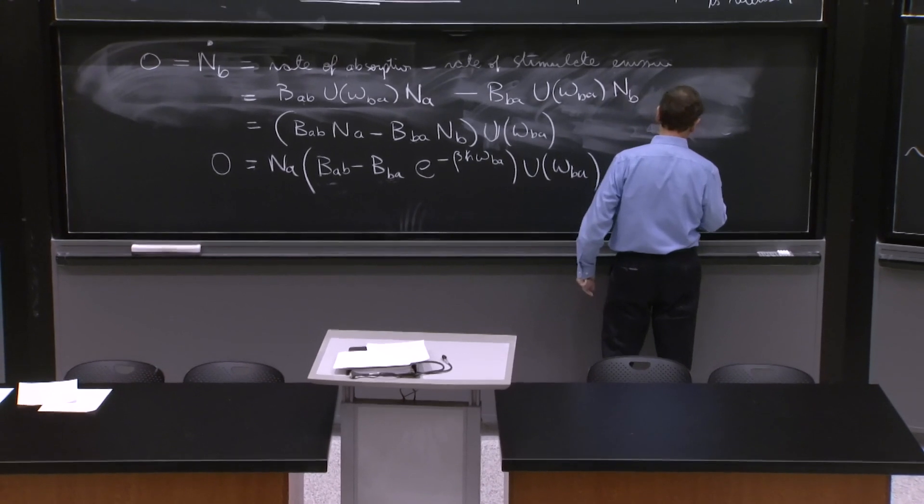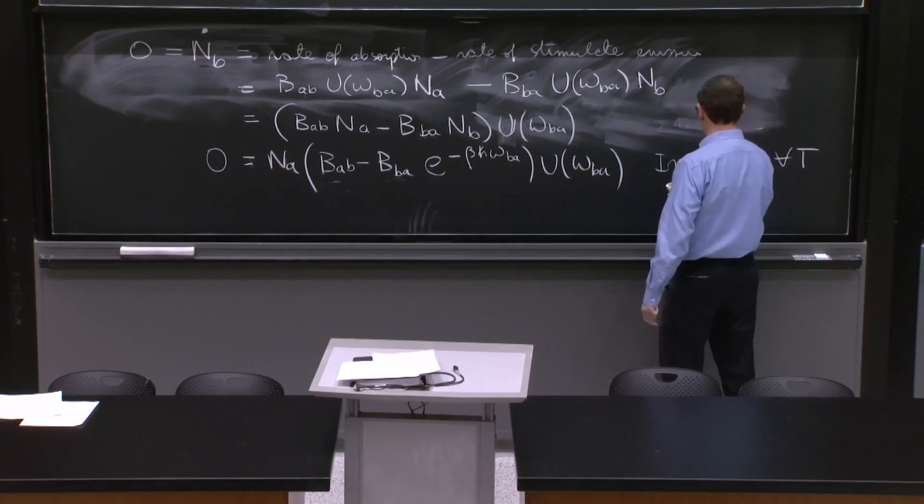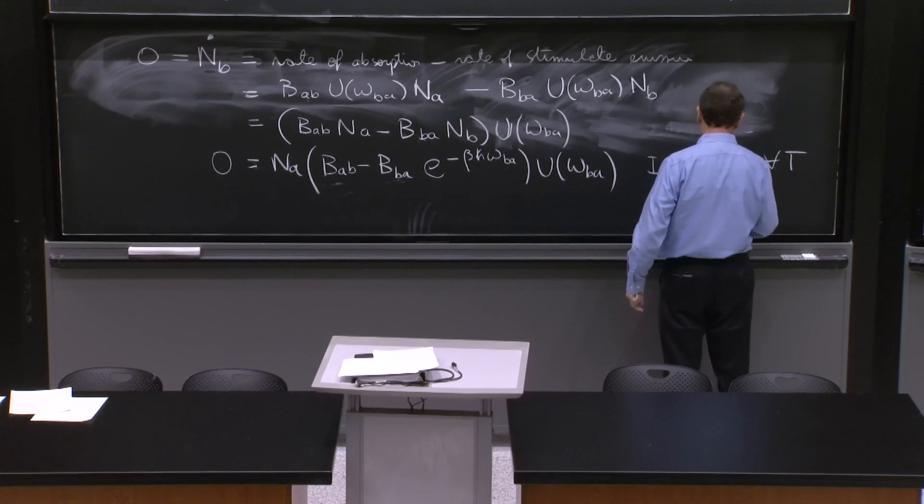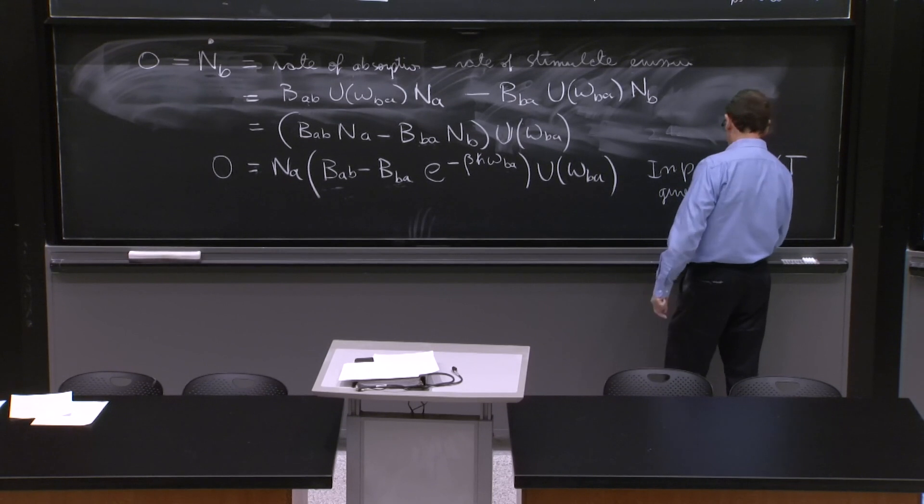And we're asking this to be 0, which requires this factor to be 0, and this depends on temperature. So you cannot attain equilibrium with this. So it's impossible to satisfy for all temperatures. Impossible for all temperatures given that BAB and BBA are constants.